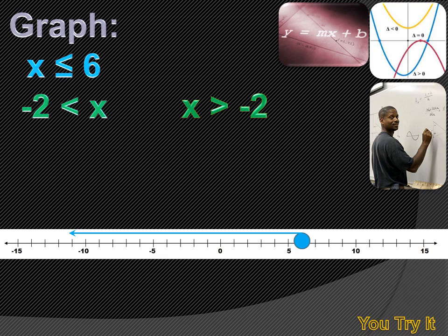We need to indicate where minus 2 is on the number line, and that's going to be an open circle, because we're not including minus 2. So it'll be an open circle over minus 2, with an arrow pointing towards the larger numbers, because X is larger than minus 2.